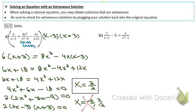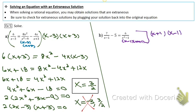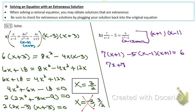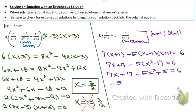In the last problem, factor the difference of squares. Multiply through by the common denominator (x plus 1)(x minus 1). In the first fraction (x minus 1) cancels, in the second fraction nothing cancels, and in the third fraction everything cancels. Then distribute and FOIL first, then distribute the negative 5.